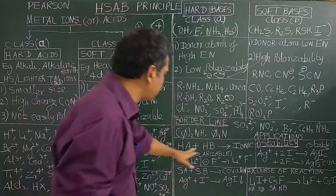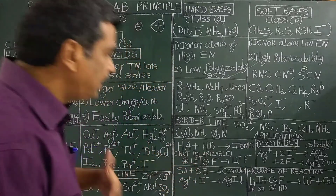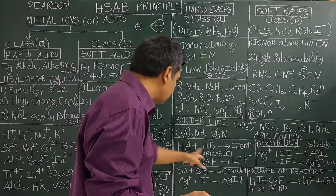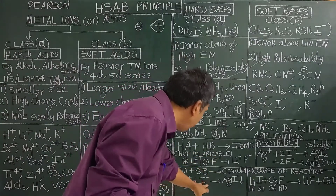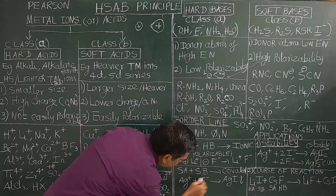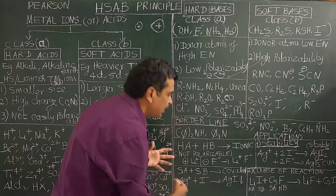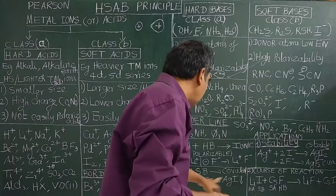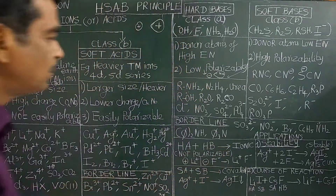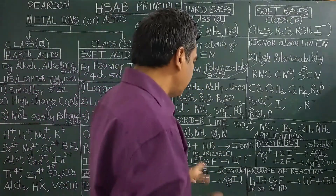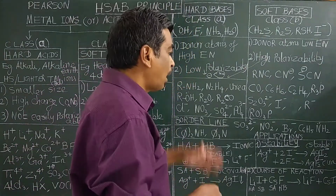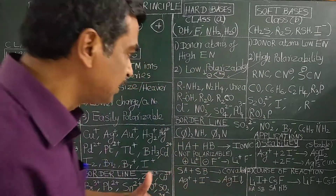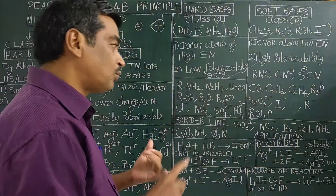Based on the HSAB principle, we can explain why hard acids prefer hard bases because they are not polarizable atoms. The HSAB principle has four main applications.